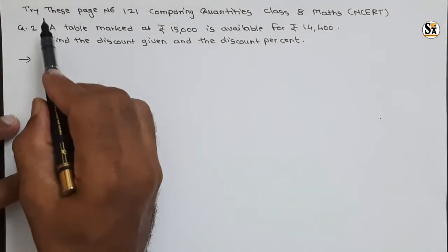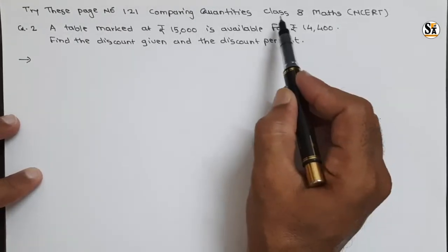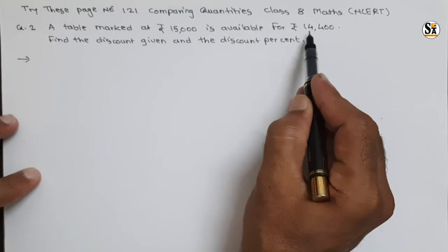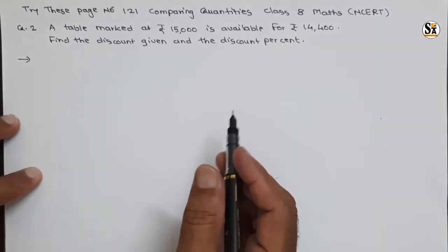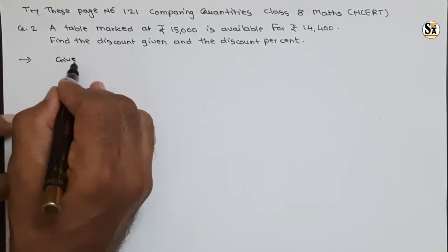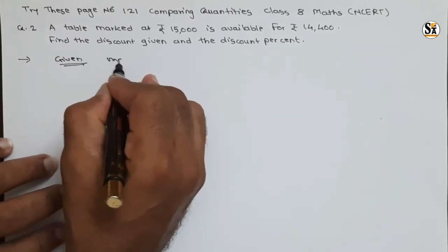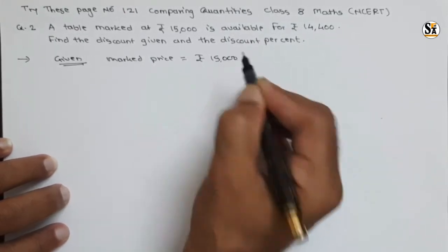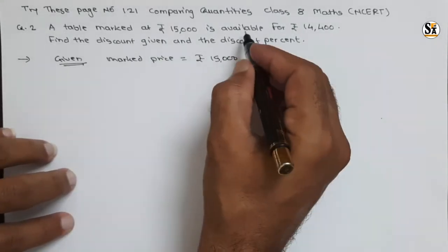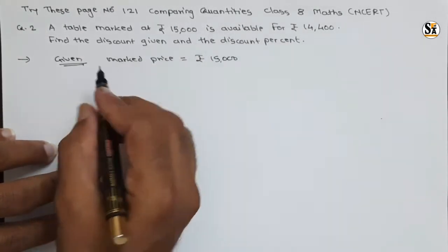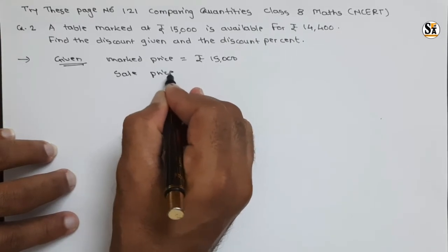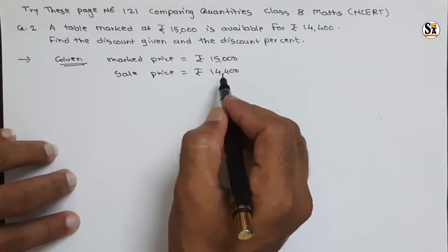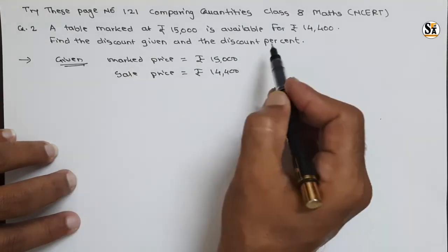Question number 2 under the 'Try This' section, page 121, comparing quantities Class 8 Mathematics. A table marked at rupees 15,000 is available for rupees 14,400. Find the discount given and the discount percentage. What is given: mark price equals rupees 15,000 and sale price equals rupees 14,400. With this data we have to find the total discount in rupees and percentage discount.